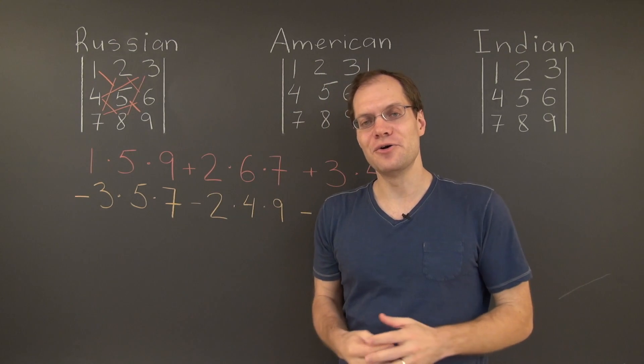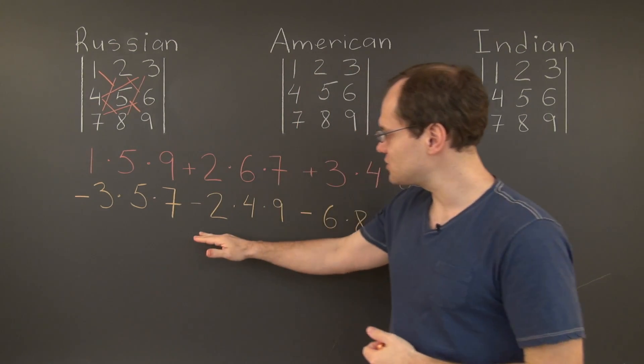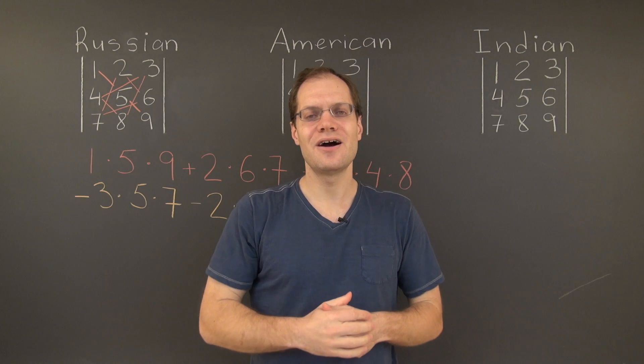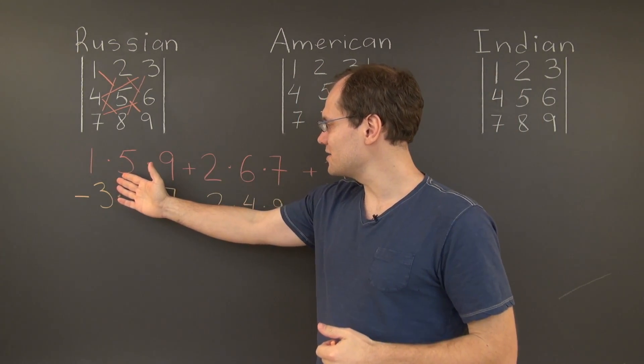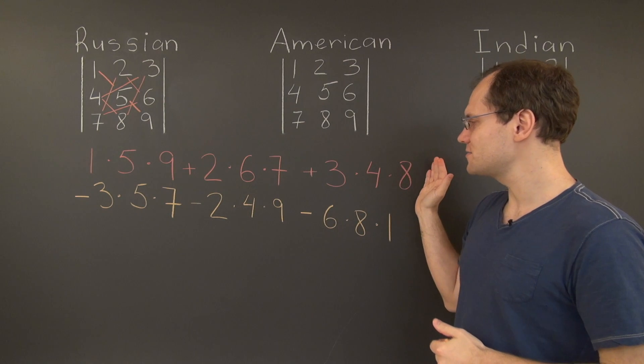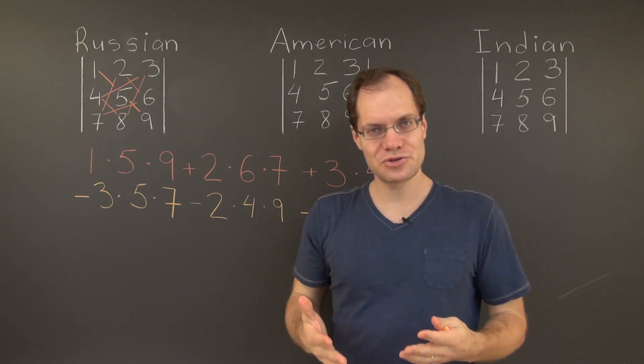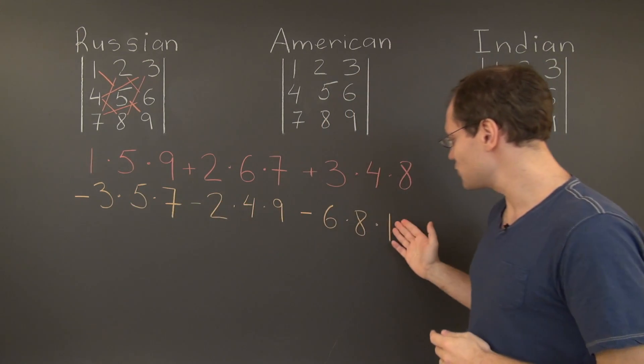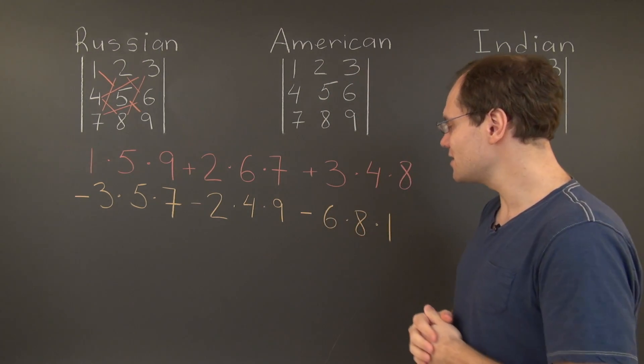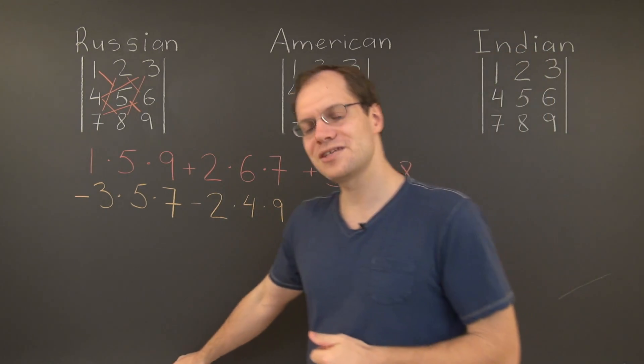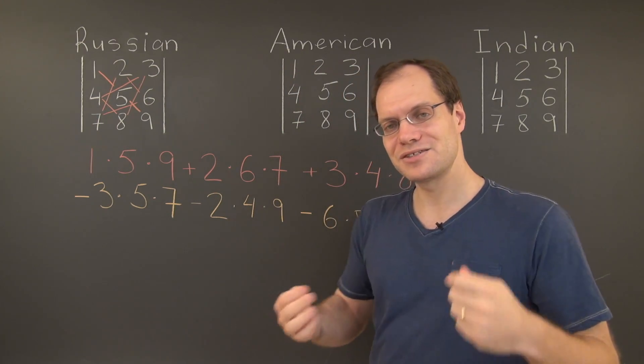And there you go. We've ended up with the six terms that represent the determinant of this matrix. And of course, when we complete this calculation, the three positive terms will add up to 225. The three negative terms will add up to negative 225. And the result is zero, which of course, something that we knew to begin with. So let's write it down. So there you go.